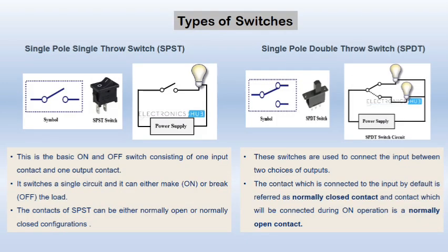We have different types of switches. First, we have the single pole single throw switch. Here you can see the symbol and picture of this switch. As you can see, it is open now, and if you make the connection, it will be closed and current will flow towards the bulb.